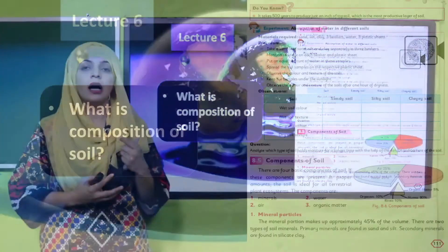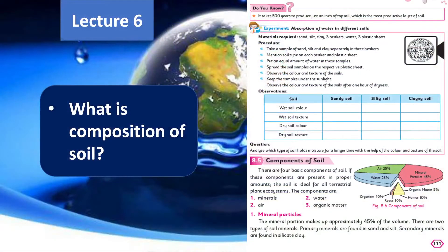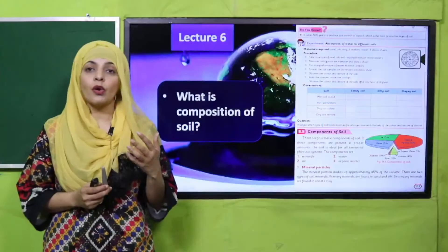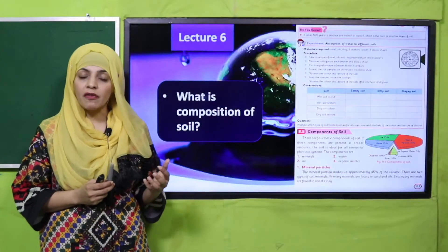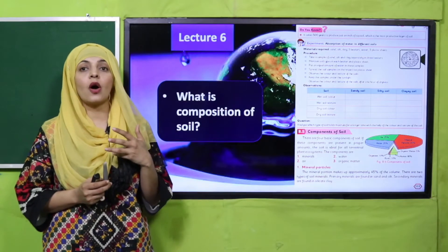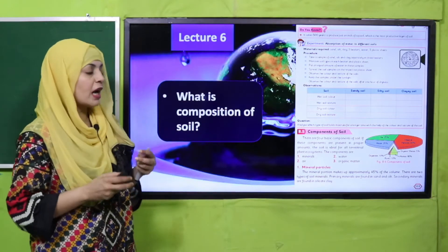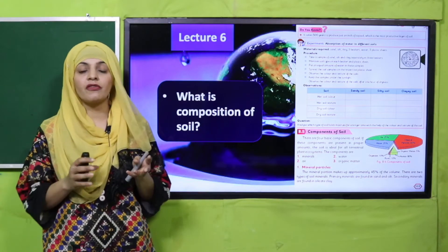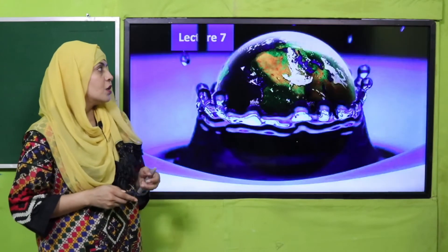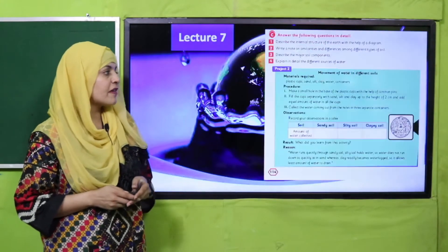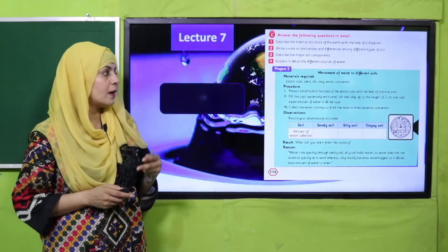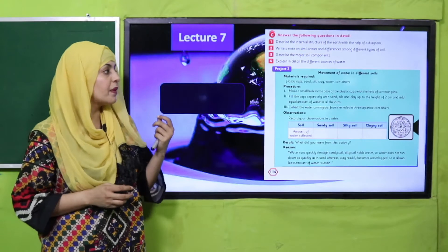Then in lecture number six we discussed about the composition of the soil — soil ki kya kya composition hai, kin kin cheezon se yeh bani hai. So mineral content hota hai woh 45 percent hota hai, water is 25 percent, air is 25 percent, then organic matter is also 5 percent. So that is the composition of an ideal soil.